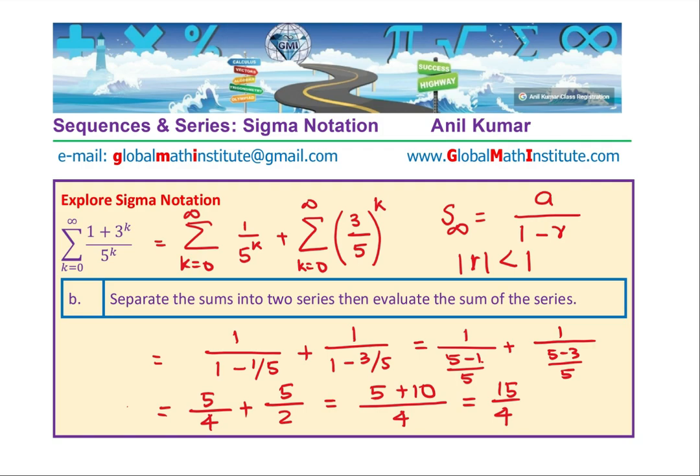So the strategy here is to split it into two parts, identify the two geometric series, apply the formula known for sum of infinite elements in the geometric series and simplifying the result. So I hope that is absolutely clear.